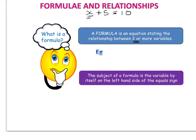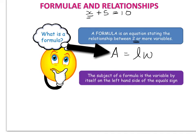You already probably know some formulae, especially for area of shapes. So you probably know that the area of a rectangle is equal to the length times the width. We've got three variables there — area, length, and width — and the relationship between them is that when you multiply the length and width together you find the area. The subject of a formula is the variable that's by itself on the left-hand side of the equal sign. So in this case the subject of the formula would be A, the area, because that's the one by itself on the left-hand side.